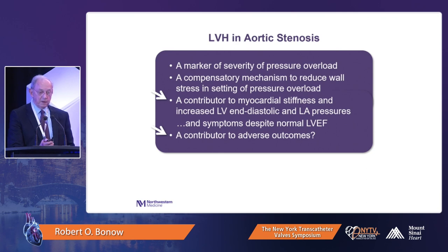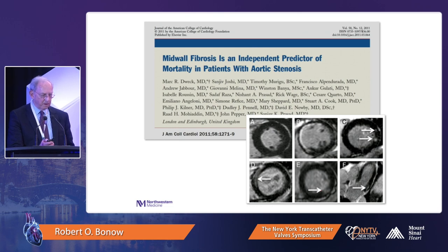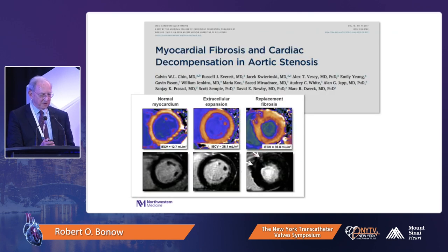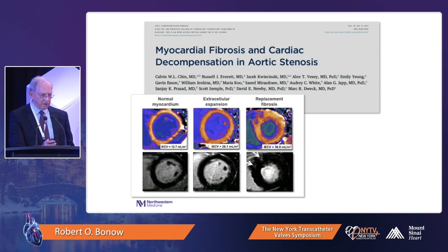LVH leads to myocardial stiffness, increased LV end-diastolic and LA pressures — a HFpEF phenotype — contributing to adverse outcomes. We can now study this with MRI rather than biopsies as in early studies by Krayenbuehl and Marco Chinaglia. Good data show that mid-wall fibrosis is an independent marker of mortality in aortic stenosis, again from Mark Dweck's group. A study by Chin and co-workers in symptomatic patients identified three subgroups: normal myocardium, extracellular expansion on T1/T2 mapping, and frank replacement fibrosis with late gadolinium enhancement.